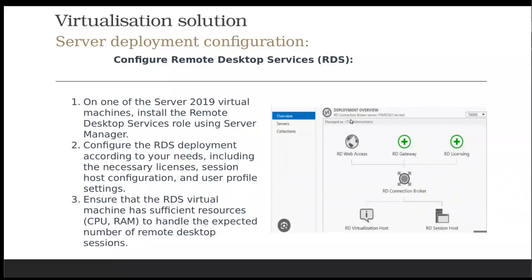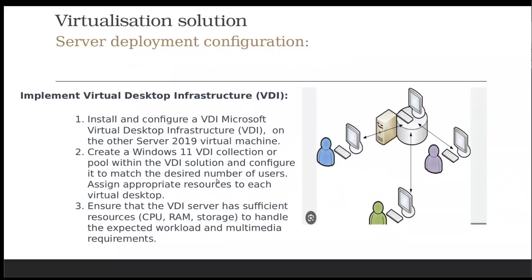Then you implement the Virtual Desktop Infrastructure (VDI). Install and configure Microsoft VDI on the other server. Create Windows 11 VDI collections — maybe 60 or as many virtual desktops as needed for your users within the VDI solution. Configure it to match the desired number of users and assign appropriate resources to each virtual machine, such as memory and CPUs. Ensure that the VDI server has sufficient resources.